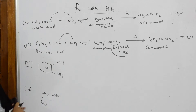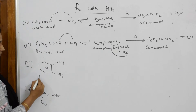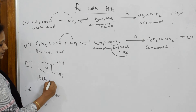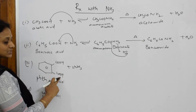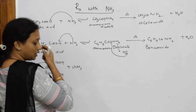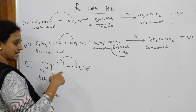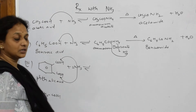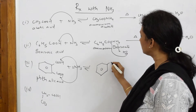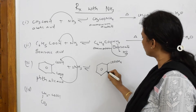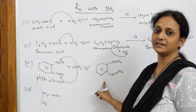Now let us pick up phthalic acid. Most students spell it wrong — it is p-h-t-h-a-l-i-c acid. I am going to add two molecules of ammonia to phthalic acid in a reversible reaction. One ammonia molecule adds to the first COOH, another adds to the second COOH. What do I get? A benzene ring with two COONH4 groups — this is ammonium phthalate.